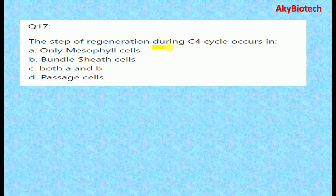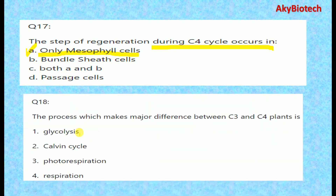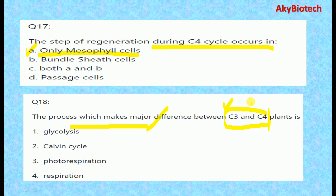Question seventeen: The step of regeneration during the C4 cycle occurs only in the mesophyll cells. Question eighteen: The process which makes the major difference between C3 and C4 plants is photorespiration.